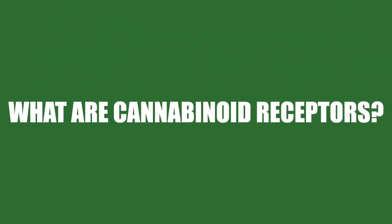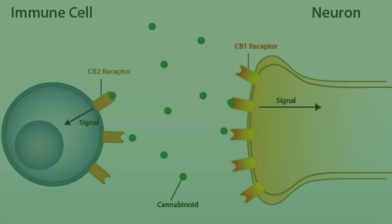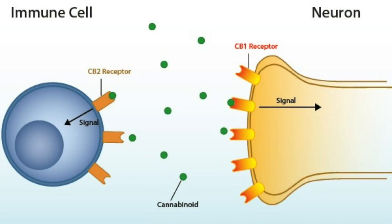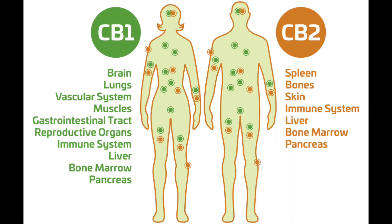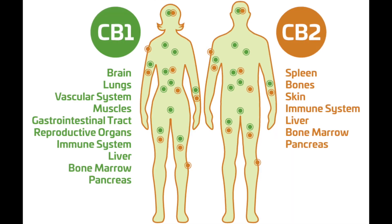What are cannabinoid receptors? Receptors are message receivers. Messages come in the form of chemical messengers binding to the receptor, and these messages produce a characteristic effect within the body. The endocannabinoid system has two receptors: CB1 and CB2.